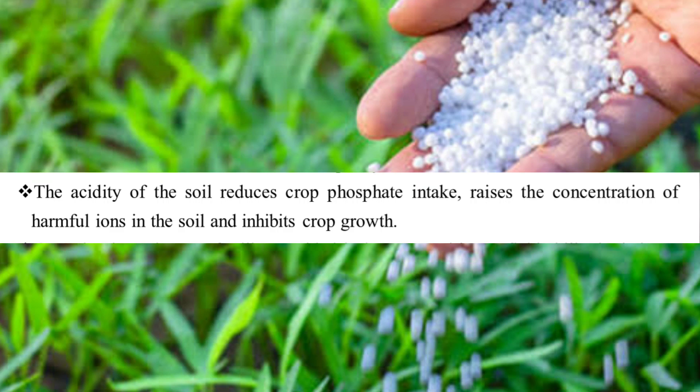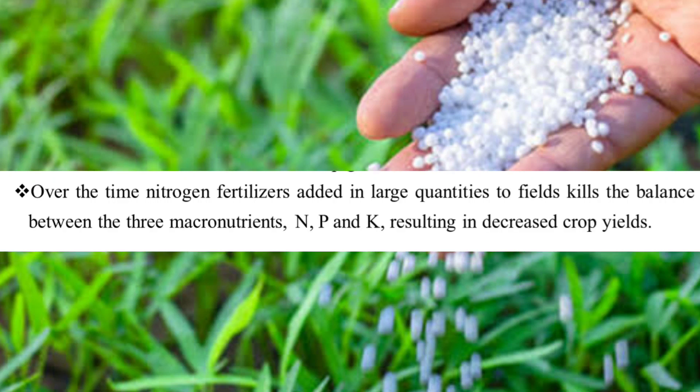Soil acidity inhibits crop growth. Over time, nitrogen fertilizers added in large quantities kill the balance between macronutrients — nitrogen, phosphorus, and potassium — resulting in decreasing crop yield.